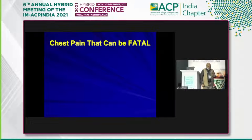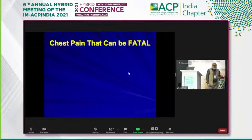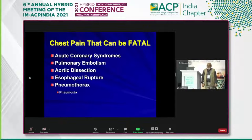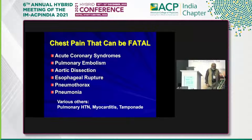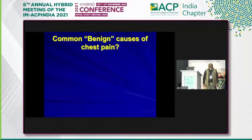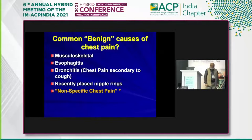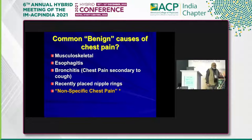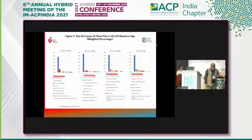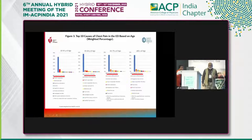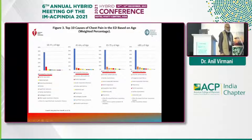It is very important to remember in the initial stage what are the causes of chest pain that can be fatal: acute coronary syndromes, pulmonary embolism, aortic dissection, esophageal rupture, pneumothorax, pneumonia with sepsis, and others — pulmonary hypertension, myocarditis, and tamponade. But there are common benign causes of chest pain, like musculoskeletal, esophagitis, bronchitis, and the most common cause: non-specific chest pain, which basically means we don't know what it is, but it will not harm you. Fortunately, if you look at the top 10 causes of chest pain irrespective of age, non-specific chest pain is seen in more than 50% of patients.